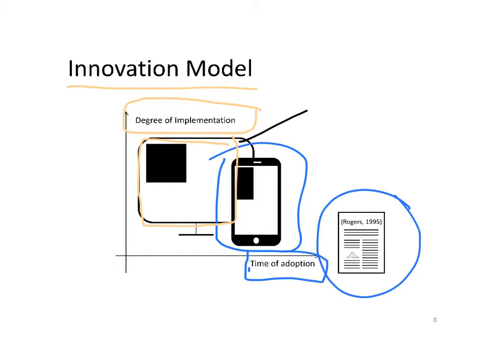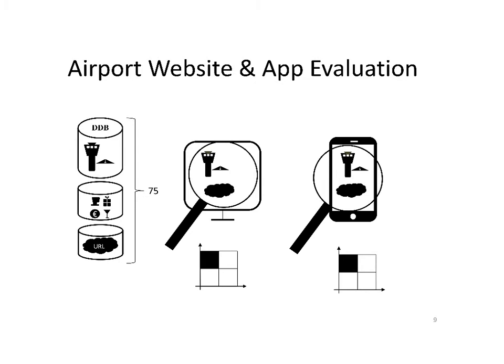The second innovation taken here has been the PC website of airports. For a database of 75 airports, airport websites were evaluated, as well as mobile website and applications when available. And the data gathered allow us to apply the innovation model just defined.